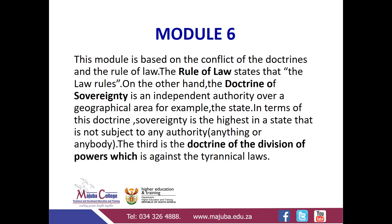This module is based on the conflict of the doctrines of the rule of law. The rule of law states that the law rules and that is all. On the other hand, the Doctrine of Sovereignty is an independent authority over a geographical area, for example, the state. Sovereignty is the highest authority in a state not subject to anything or anybody. The third is the doctrine of the division of powers, which is against tyrannical laws — that is, cruel and oppressive government rules, like those during the time of apartheid in South Africa.